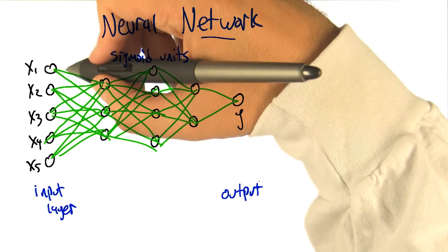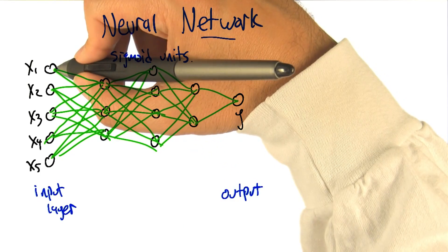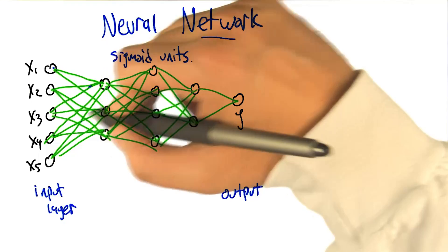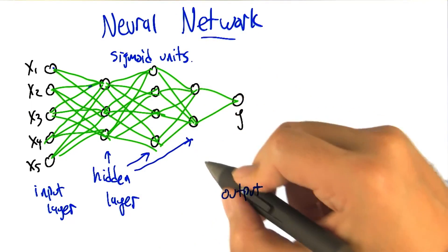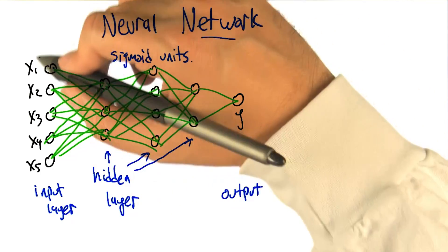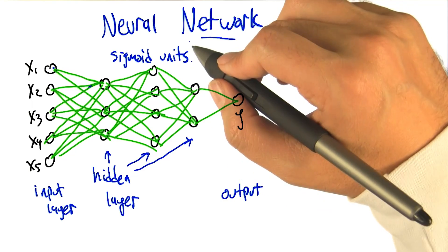The way this is going to happen is there's other layers of units in between, that each one is computing the weighted sum, sigmoided, of the layer before it. These other layers of units are often referred to as hidden layers, because you can kind of see the inputs, you can see the outputs, this other stuff is less constrained, or indirectly constrained.